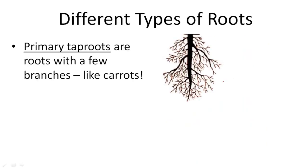There are two different types of roots. Primary tap roots are roots with very few branches, like carrots. You've seen a carrot — when it first comes out of the ground, maybe it has some funny little knobs on it that were where the roots were, but there aren't very many of them.